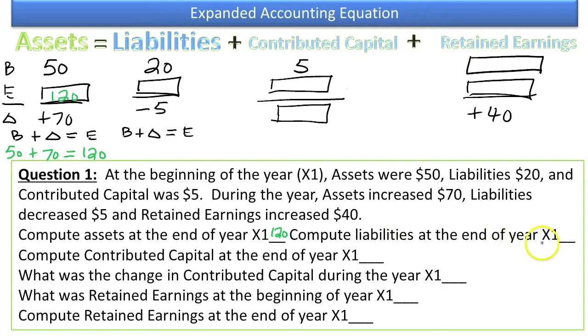Compute liabilities at the end of the year X1. We know the beginning was $20. It reduced by $5 to get down to the ending of $15.